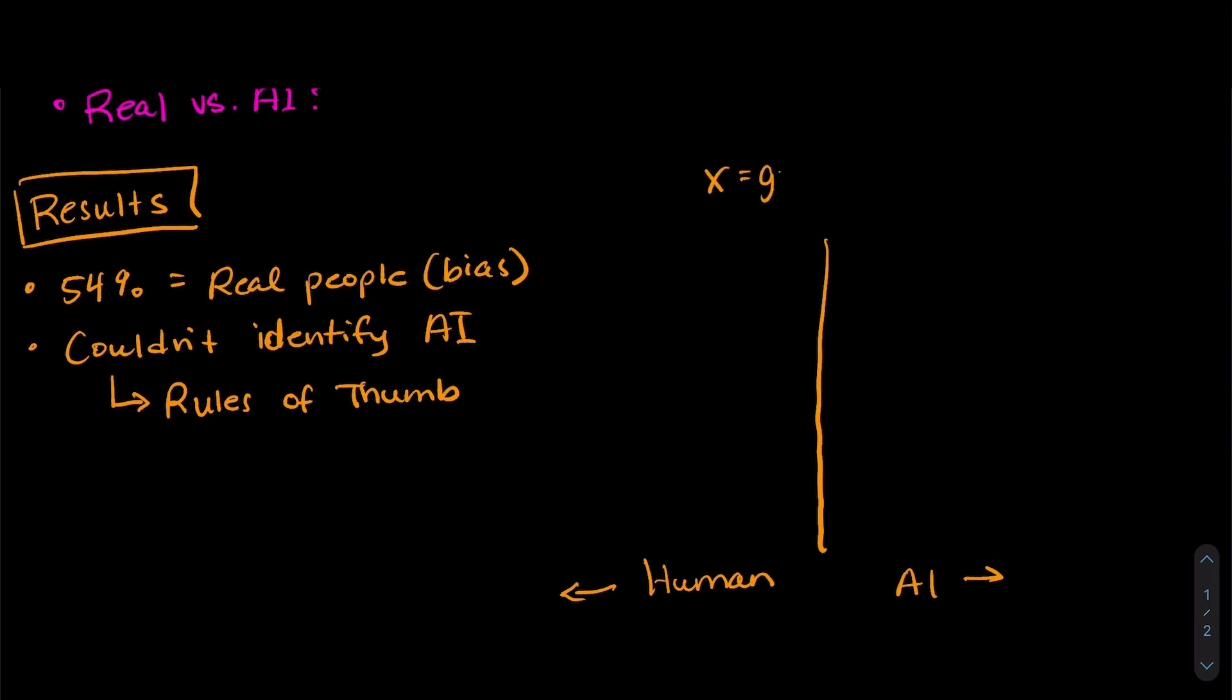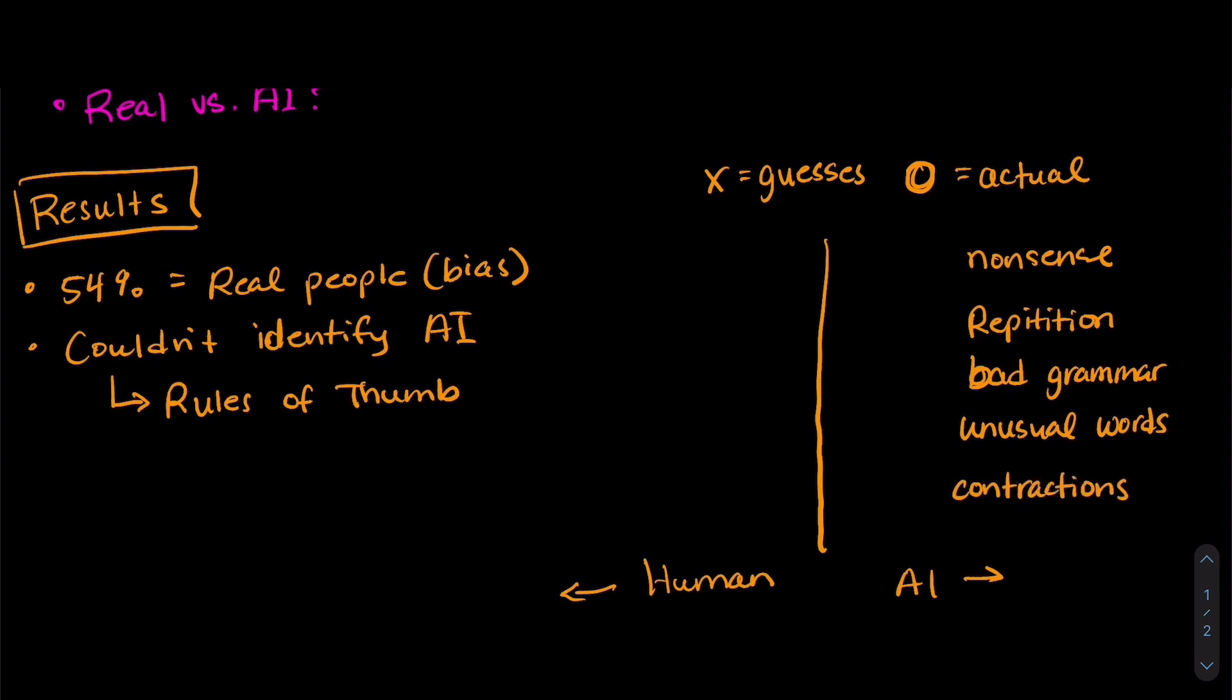Okay, so the x's are going to be the guesses that people made, and the o's are going to be the actual traits of the bios that that group of people looked at before. So things like nonsense, repetition, bad grammar, unusual words, and contractions, like don't and won't.